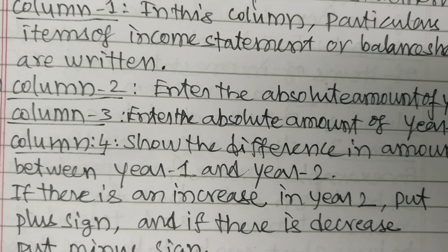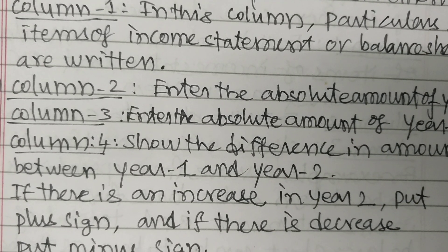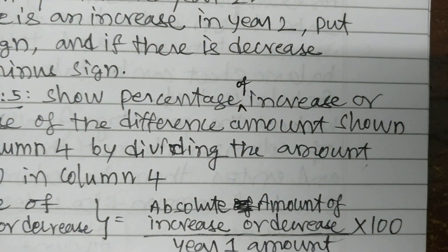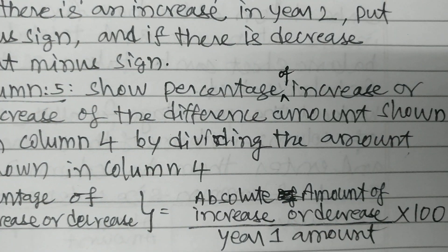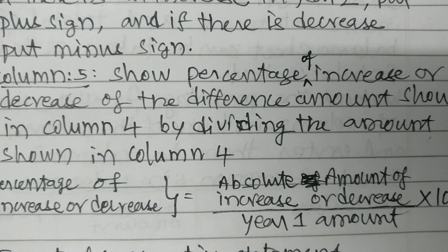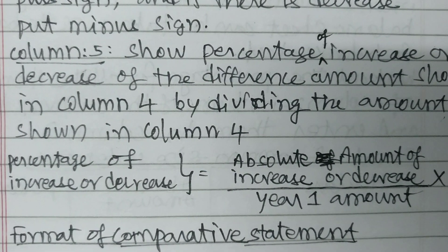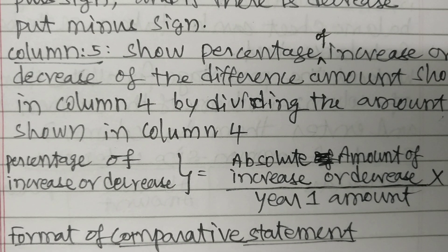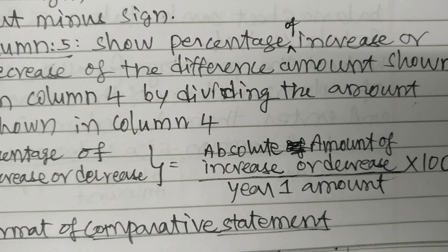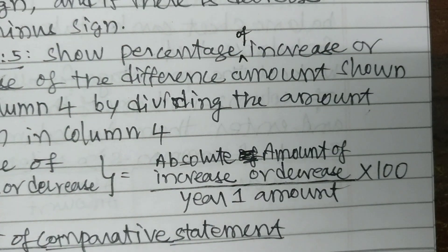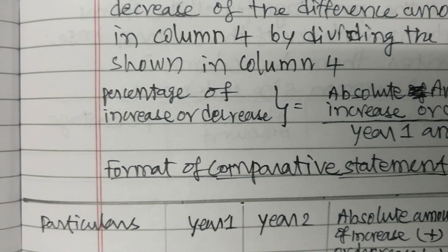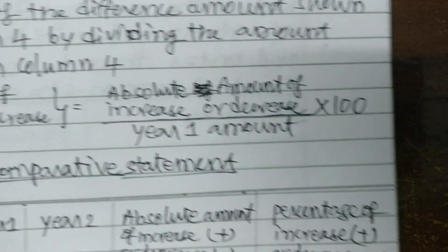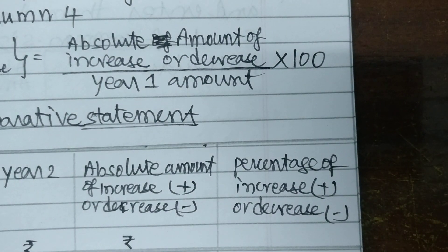If there is an increase in Year 2, put plus sign; if there is a decrease, put minus sign. Column 5: Show the percentage of increase or decrease of the difference amount shown in Column 4, by dividing the amount shown in Column 4. Percentage of increase or decrease equals absolute amount of increase or decrease divided by Year 1 amount, into 100. Format of comparative statement: Particulars | Year 1 | Year 2 | Absolute amount of increase or decrease (+/-) | Percentage of increase or decrease (+/-).